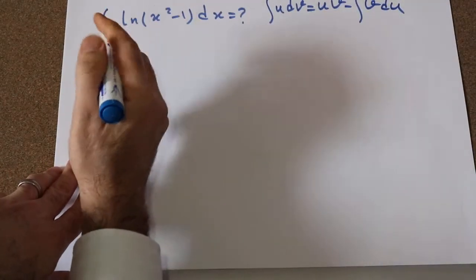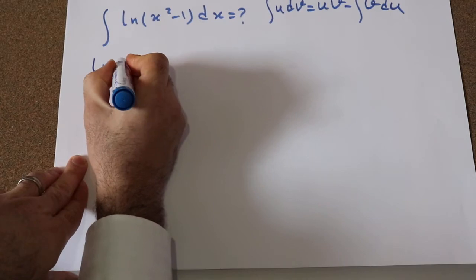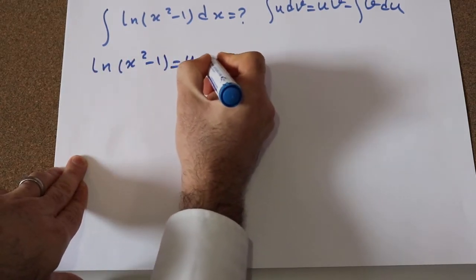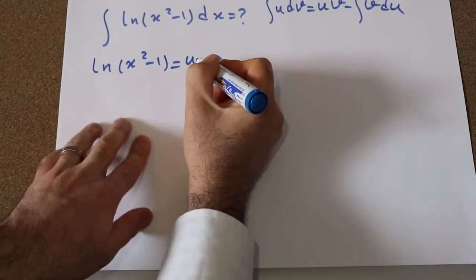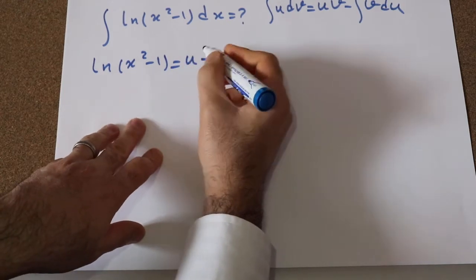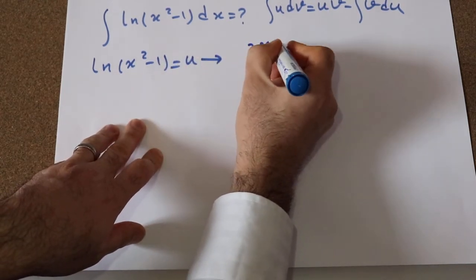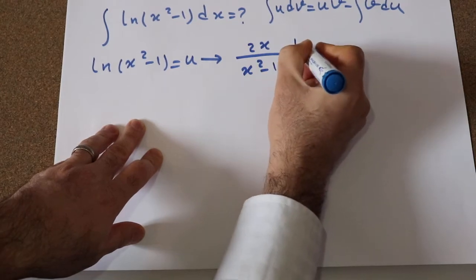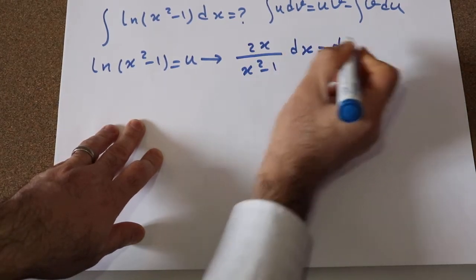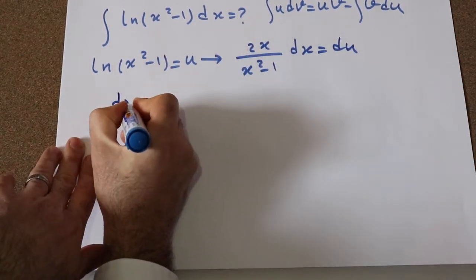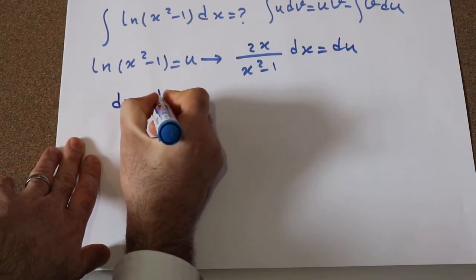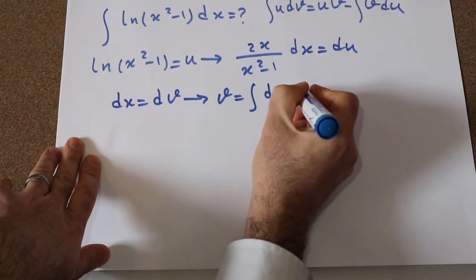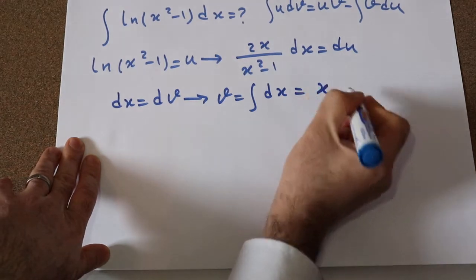So here, if I define ln(x² - 1) as u, and take the derivative from each side of this equation, we get 2x divided by (x² - 1) dx equal to du. And also if I define dx as dv, you can conclude that v is equal to the integral of dx, which will be equal to x.